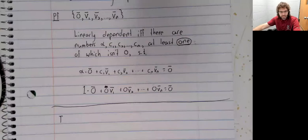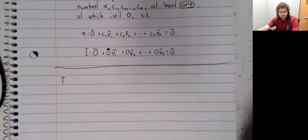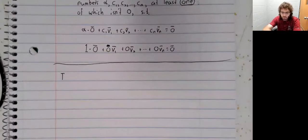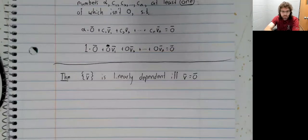The next theorem is a bit of a sequel to this. At least it's related. A single vector set is linearly dependent if and only if that vector is the zero vector.